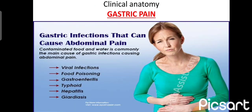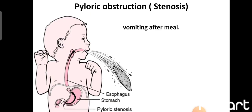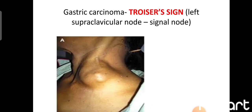Clinical aspects: gastric pain is very common, due to infections from viruses, food poisoning, typhoid, or hepatitis. Pyloric obstruction or stenosis occurs when the pyloric part becomes thicker and narrows the pyloric canal, preventing gastric contents from passing through. Infants with pyloric stenosis are unable to digest food properly and experience vomiting after meals.